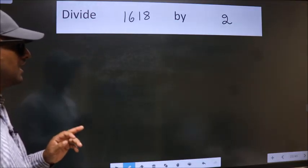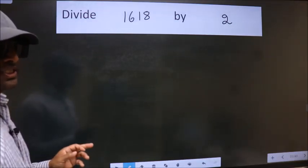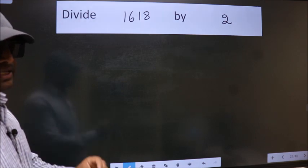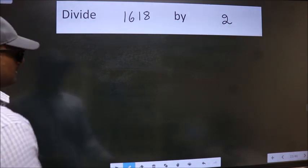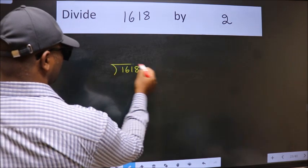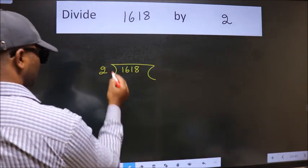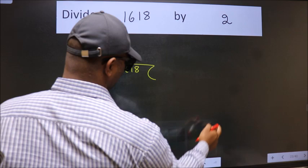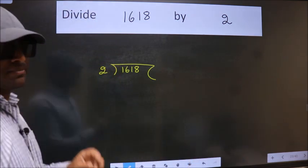Divide 1618 by 2. To do this division, we should frame it in this way: 1618 here, 2 here. This is your step 1.